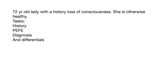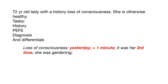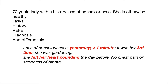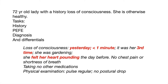We have a 72-year-old lady with a history of loss of consciousness. She is otherwise healthy. Your task is to take history, perform diagnosis, and differentials. The positive finding is that the patient had loss of consciousness yesterday, less than one minute, this is her third time, and it happened when she was gardening. She felt her heart pounding the day before — a history of palpitations — but there is no chest pain and no shortness of breath. She's not taking any other medications. On physical examination, the pulse is regular, there is no postural drop, and on cardiovascular examination there is a finding of ejection systolic murmur.